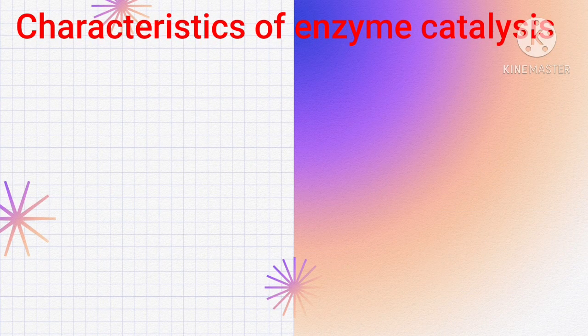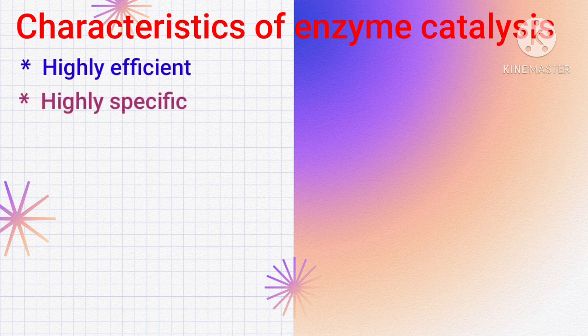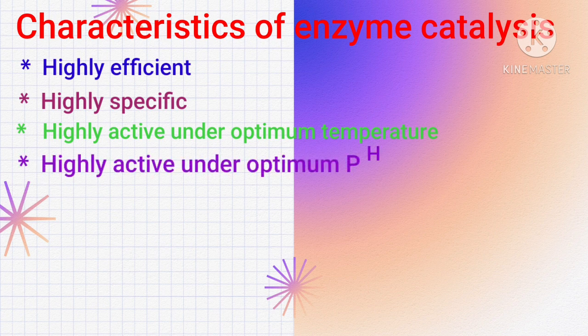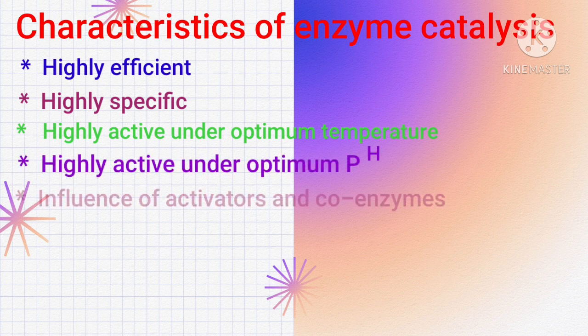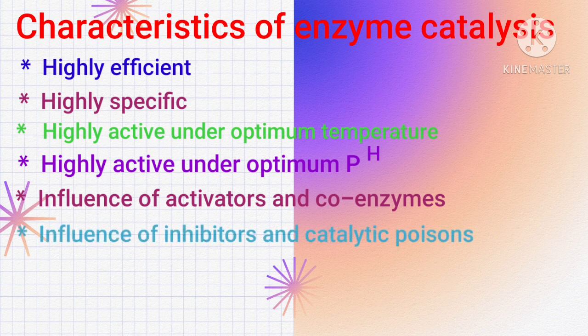These are the characteristic features of enzyme catalysis: highly efficient, highly specific in nature, highly active under optimum temperature, highly active under optimum pH, influence of activators and coenzymes, and the last one is influence of inhibitors and poisons.